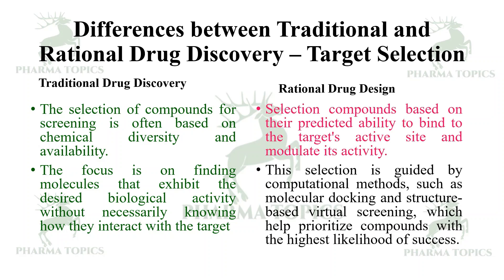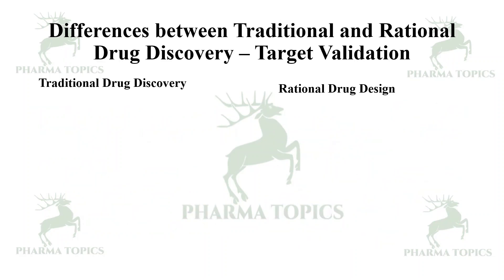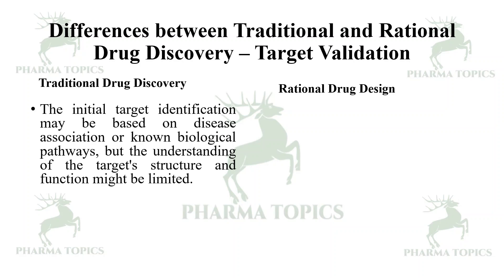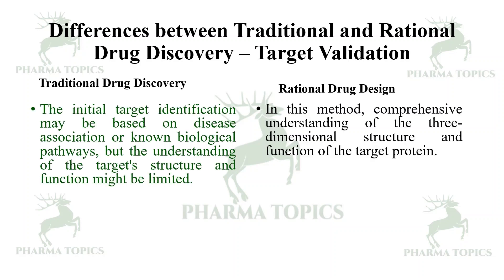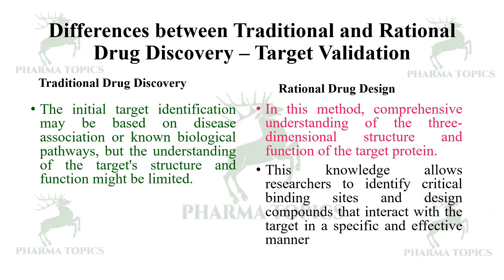The selection in rational drug design is guided by computational methods such as molecular docking and structure-based virtual screening, which help prioritize compounds with the highest likelihood of success. Regarding target validation, in traditional discovery the initial target identification may be based on disease association or known biological pathways, with limited understanding of target structure. In rational drug design, a comprehensive understanding of the 3D structure and function of the target protein is established, allowing identification of critical binding sites.